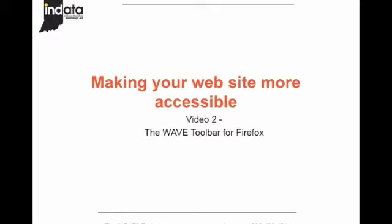In this video we're going to spend a little time talking about the WAVE toolbar, which is a free tool for Firefox. What the WAVE toolbar does is give you some fairly automated checking to see if there are problems with accessibility in your website. I have to start off with a disclaimer though: no automated tool will ever replace a human being's ability to make judgment calls about what is accessible or not accessible on your website. So although the WAVE tool for Firefox and other automated checkers are very useful tools, they're not the only tools and they're no substitute for really learning how to create accessible content from the ground up.